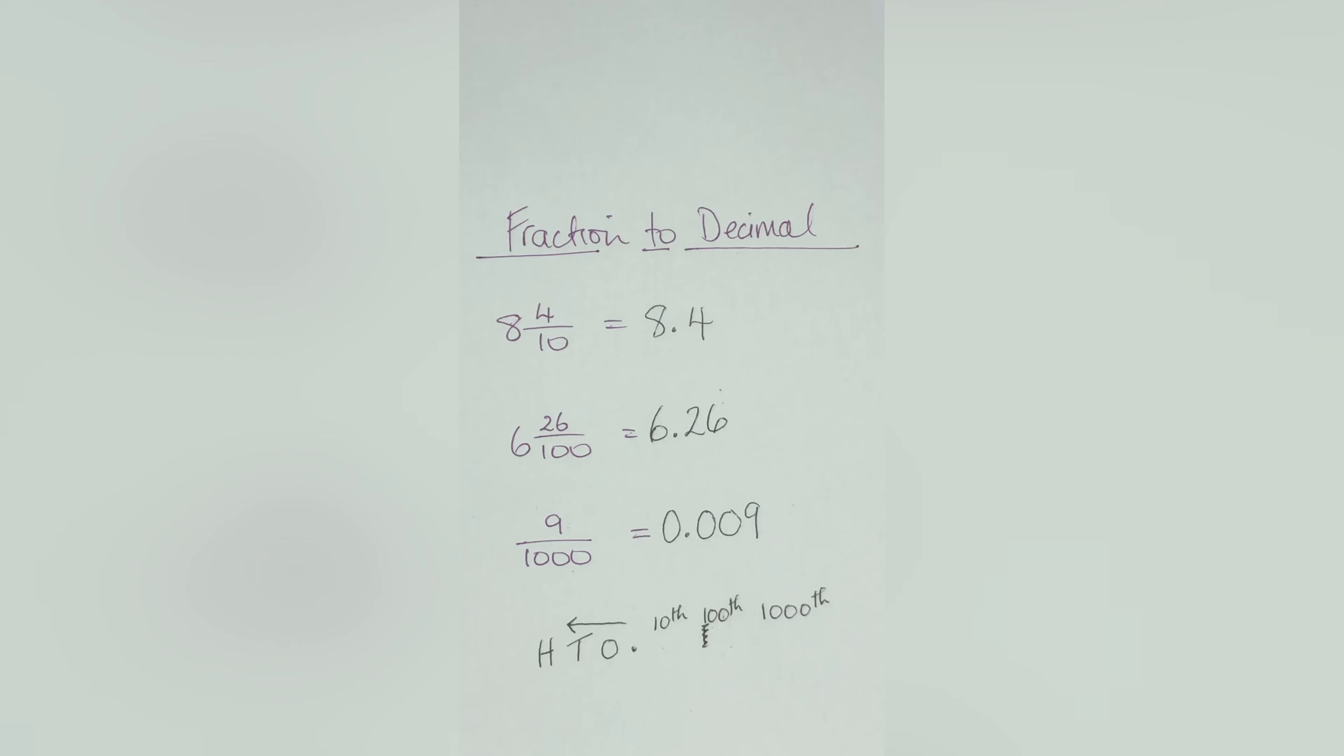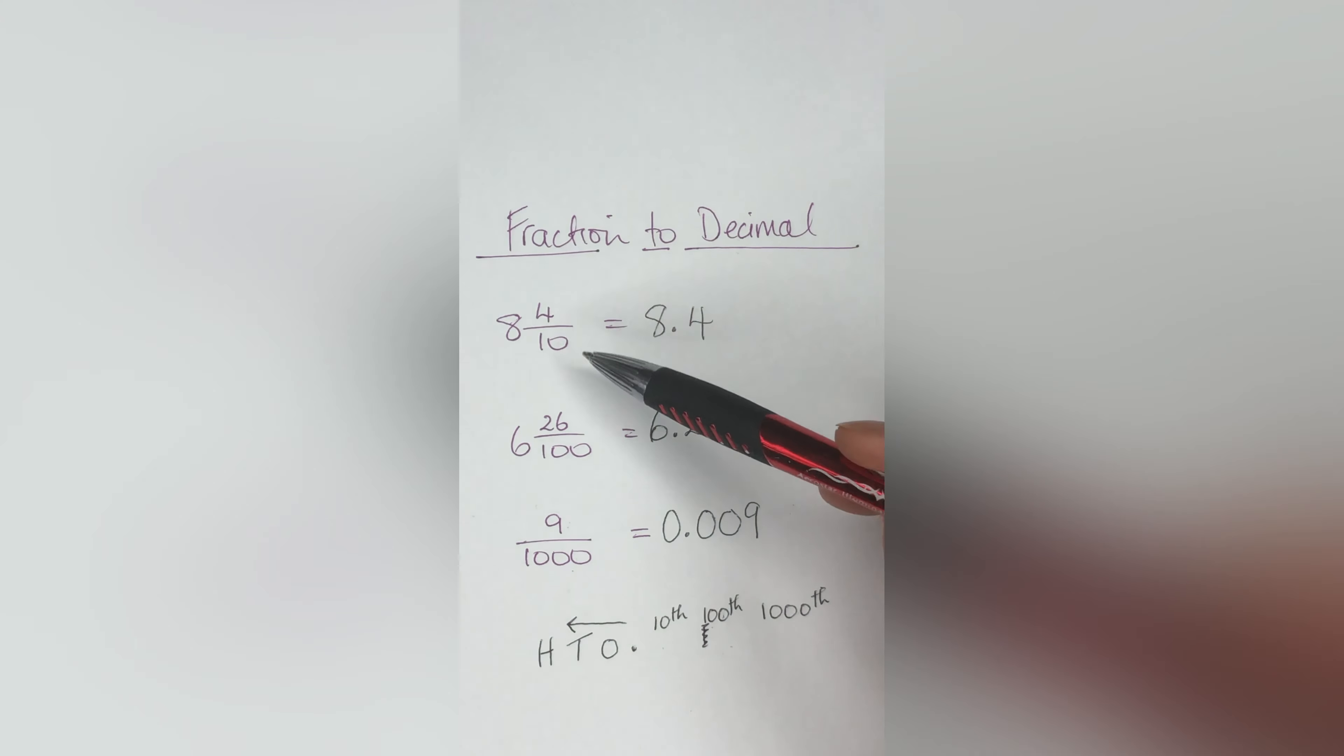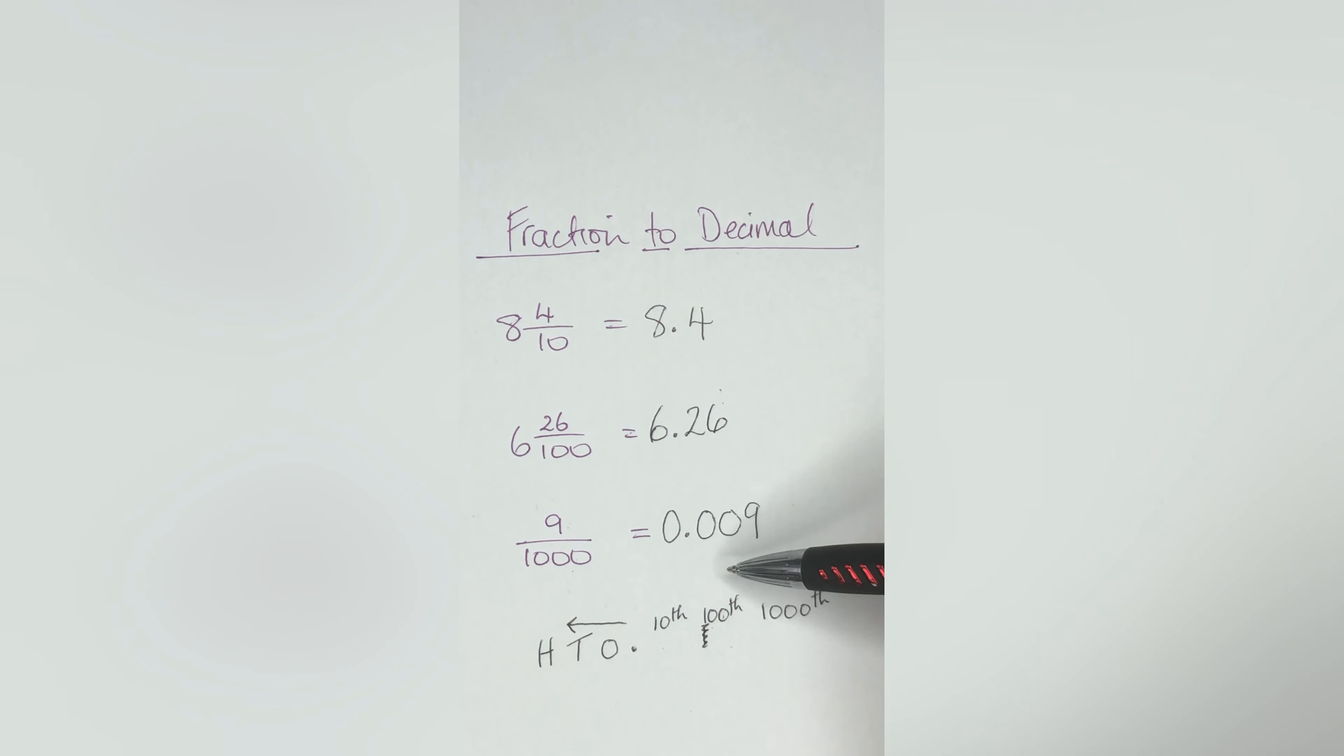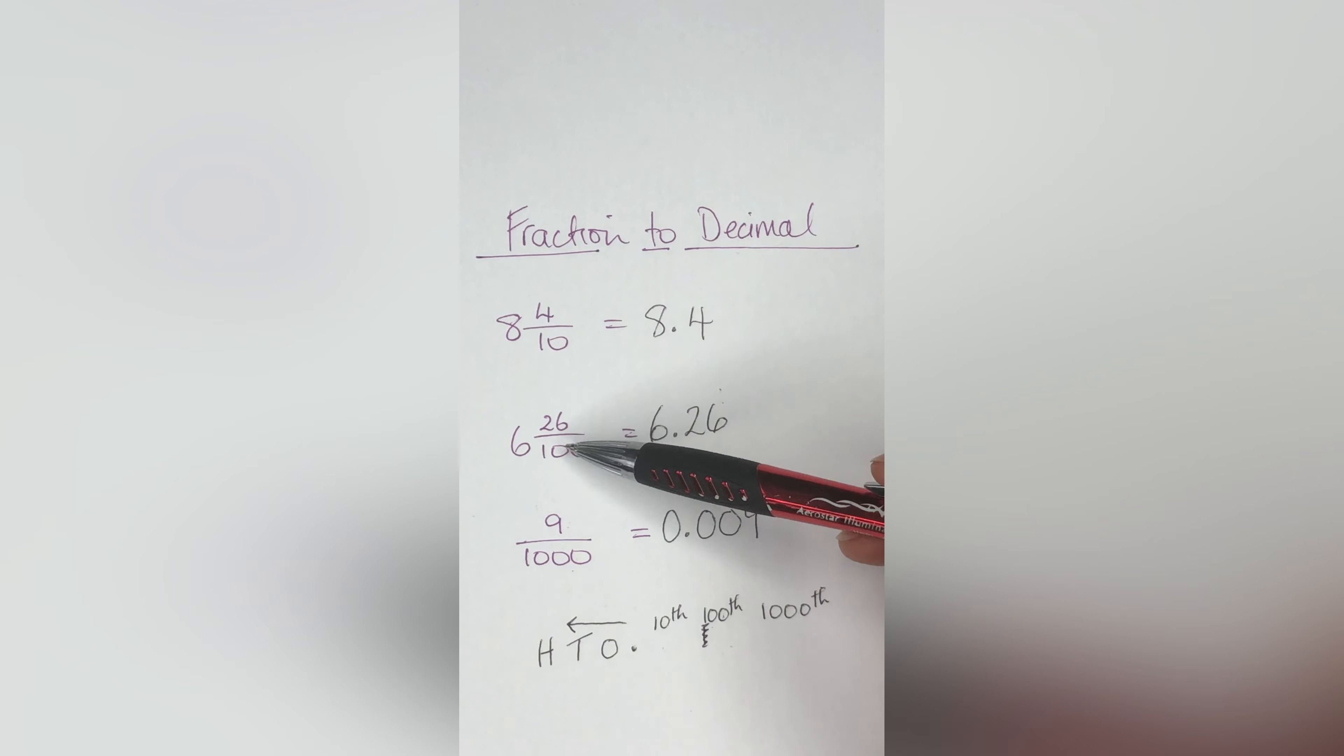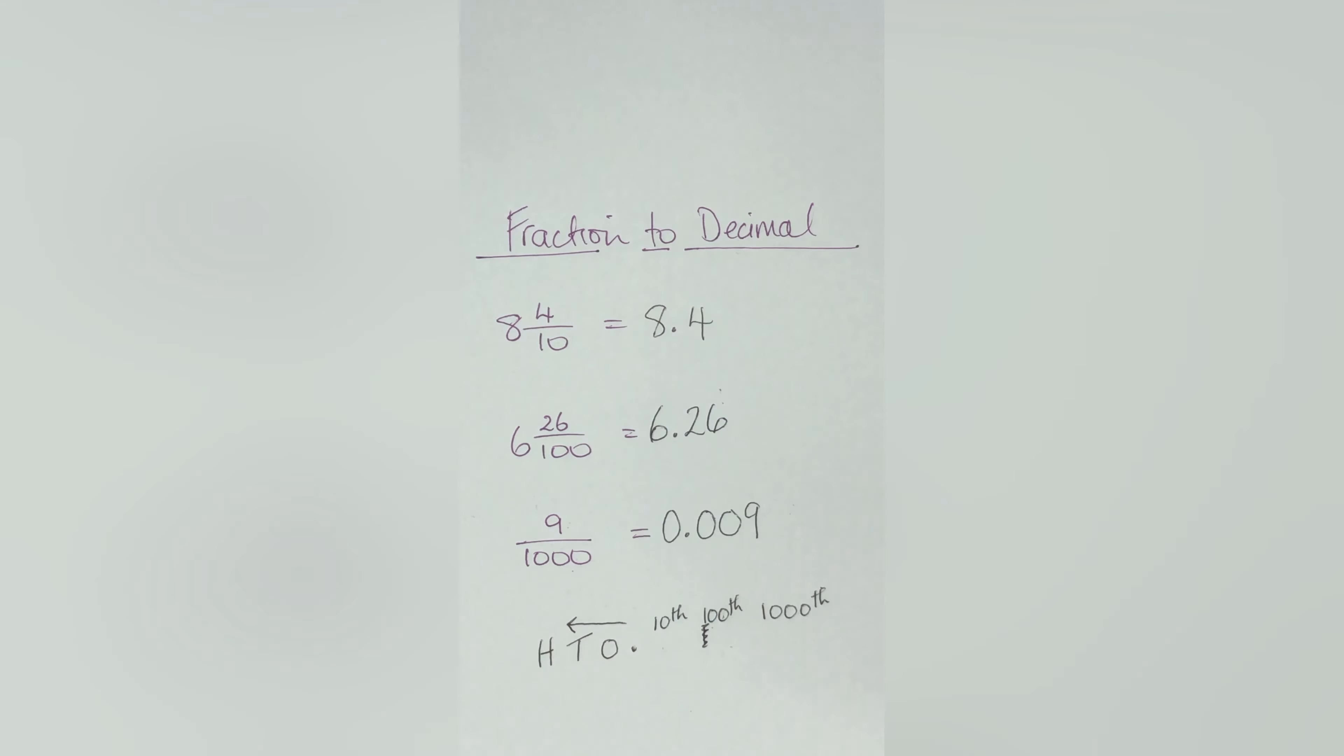And that, my friends, is how you change fractions to decimals. I kept it simple because I kept them as tenths, hundredths, and thousandths place. There are other numbers you can do. I will probably do that in another video, but for now, this is how you would change fractions to decimal with these particular numbers.